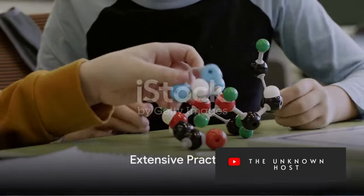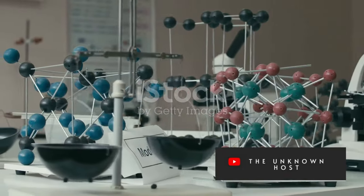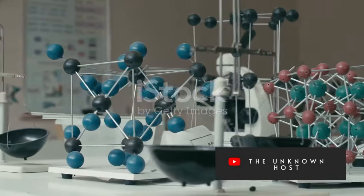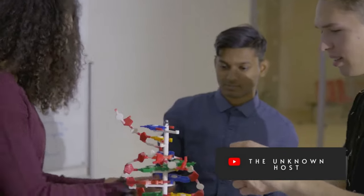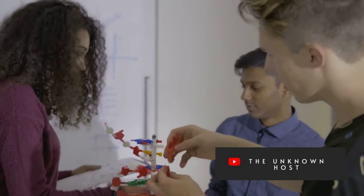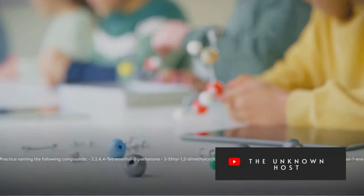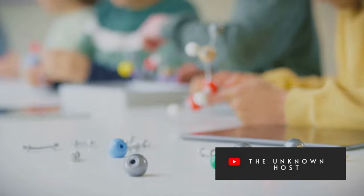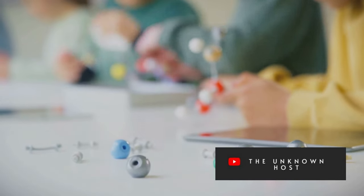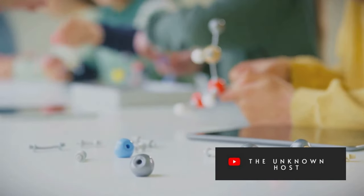Now it's time for extensive practice to reinforce your nomenclature skills. We'll tackle complex structures, and I encourage you to challenge yourself with various examples. Practice naming the following compounds: 2,2,4,4-tetramethyl-3-pentanone, 3-ethyl-1,2-dimethylcyclohexane, 6-nitro-2,5-diphenylhexanoic acid, and 1,3-diethylcyclohex-1-ene.